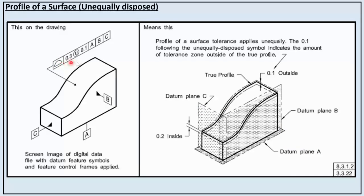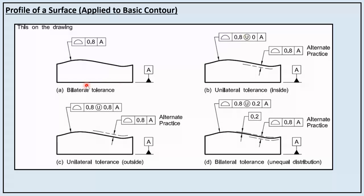For profile of a surface with unequally disposed symbols, the total geometrical tolerance is 0.3, with 0.1 after the symbol meaning 0.1 of the tolerance is outside the component and the remaining 0.2 is inside the component. If no symbol such as U with a circle is mentioned, it means it is a bilateral tolerance — for example 0.4 outside and 0.5 inside the component. In a second case, 0.8 is the total geometrical tolerance and zero is outside the part, so the complete tolerance is inside. Note that the phantom plane approach was eliminated in ASME Y14.5-2009 and 2018 editions, replaced by this symbol.